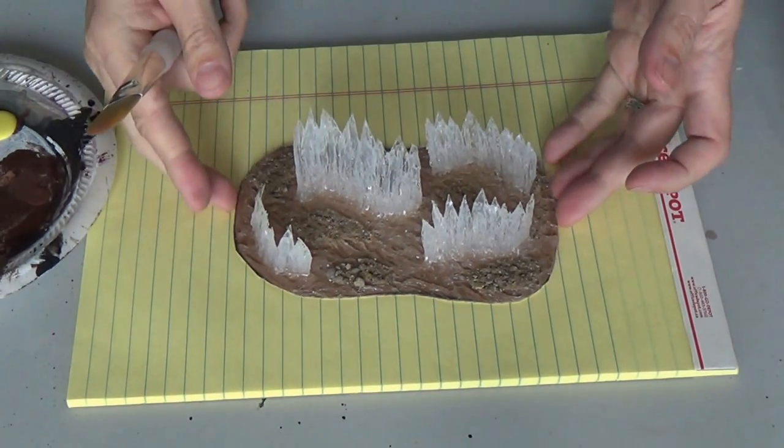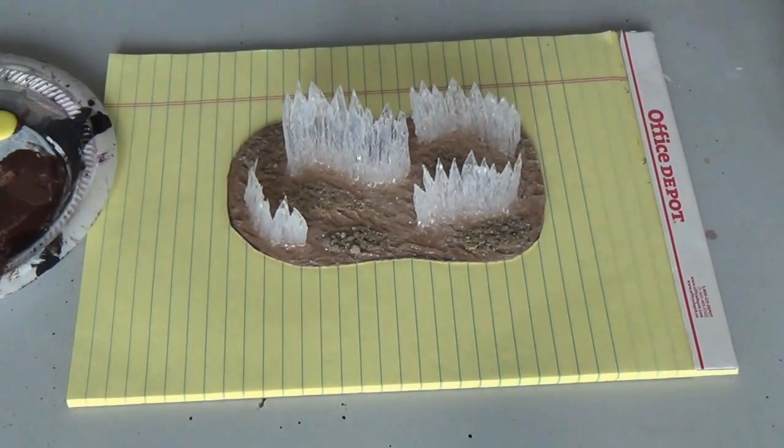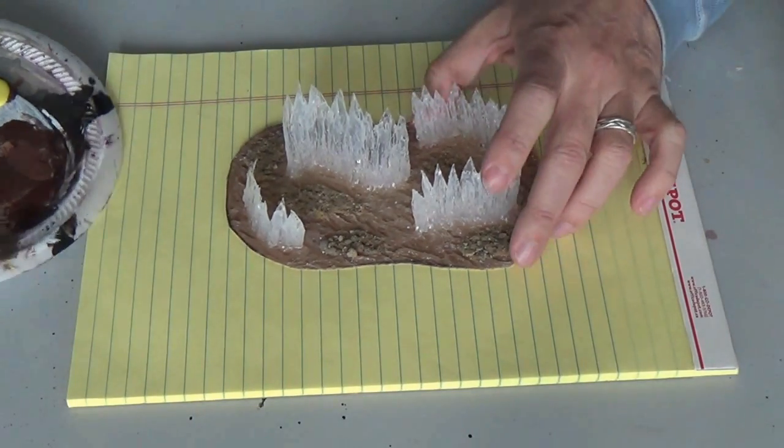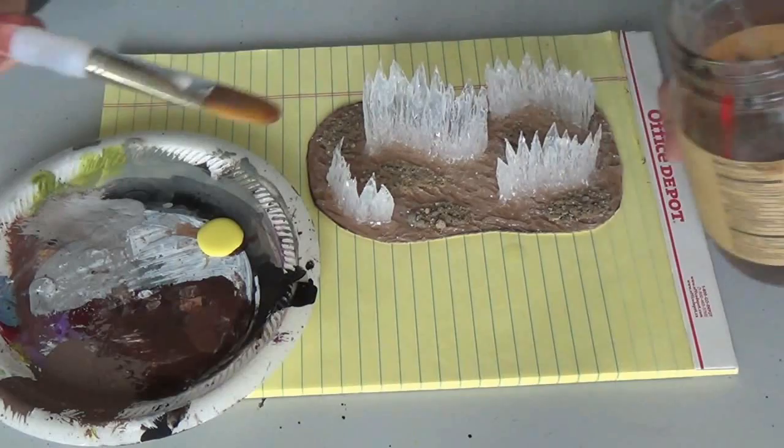I have removed the excess sand from the base. Now the next step is I want to paint this, but I want to keep the translucency of the flame. That's the trick. I'm going to use a yellow and water it down quite a bit.